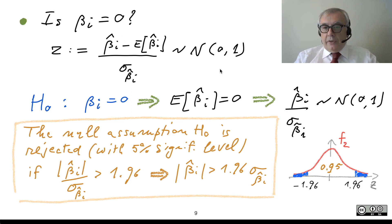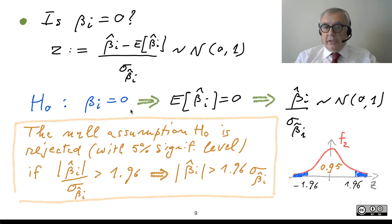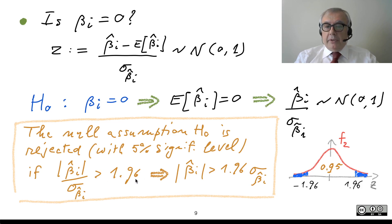Therefore, by taking this formula, we see that beta-hat-i over its standard error is normally distributed. Exploiting this fact, we can reject the null hypothesis — deciding that beta-i is different from zero with a 5% significance level — if the absolute value of this ratio is greater than 1.96.